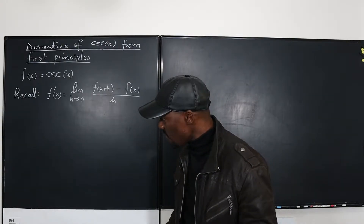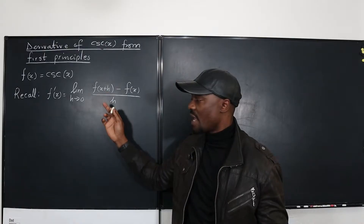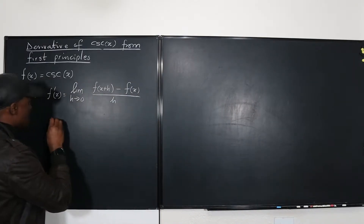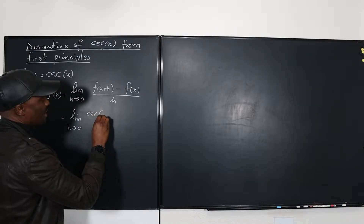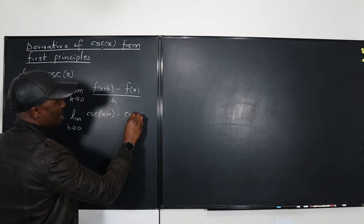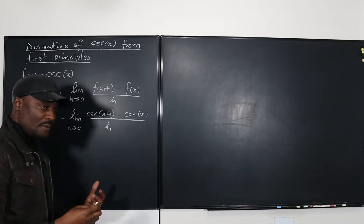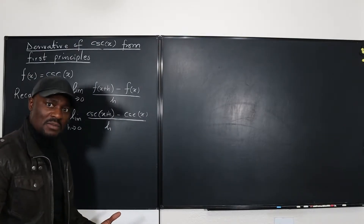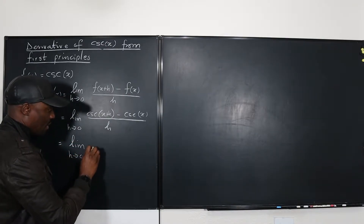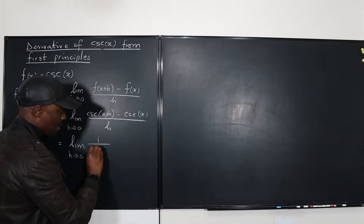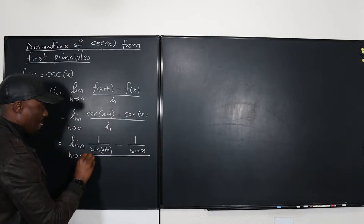So the first thing you want to do is write out the function using x plus h, going by the definition. We're going to say this is equal to the limit as h goes to zero of cosecant of (x plus h) minus cosecant x, all divided by h.